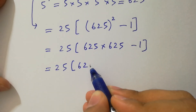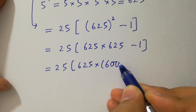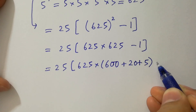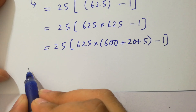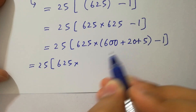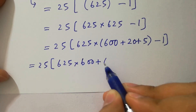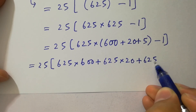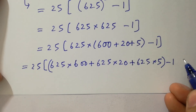625 times 625 is the same as 625 times (600 plus 20 plus 5), minus 1. So it will be 25 times (625 times 600 plus 625 times 20 plus 625 times 5), minus 1.